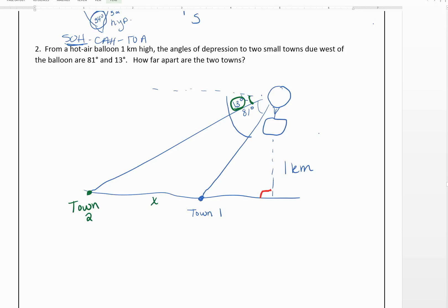We can think about the triangle down from the balloon into town one. Okay, so let's label this Y. We know this is one kilometer. Now, we're actually looking at this triangle right here. And if the angle of depression was 81 degrees, and this whole thing makes a right angle, that this angle right here has to be 9 degrees.